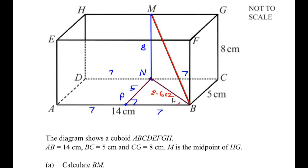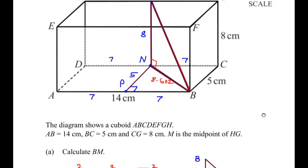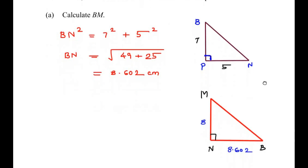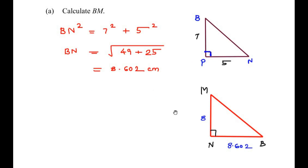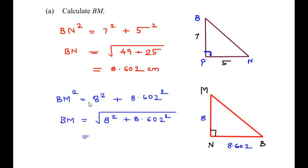Now we have to find the length of BM. We consider right-angle triangle BNM, which is right-angled at N because we dropped a straight line from the midpoint down to BC. Let me redraw this triangle — MN is 8 cm and BN is 8.602 cm. BM is the hypotenuse, so using the Pythagorean theorem: BM² = 8² + 8.602².